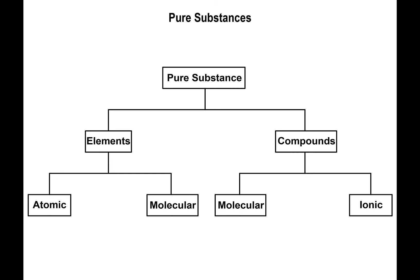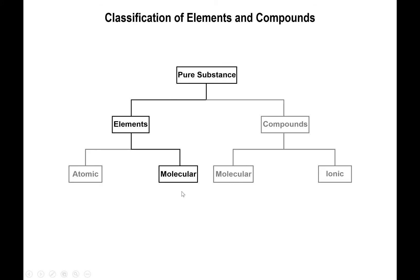Today we're going to talk about how to name substances. A substance is either an element or a molecule — that's a pure substance. When you start mixing them together you get mixtures. Focusing on pure substances, they classify into subdivisions: elements and compounds. Elements break further into atomic elements and molecular elements. Let's start with the molecular elements.